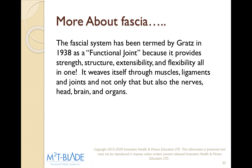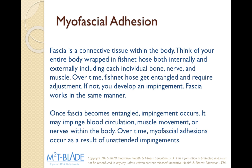A little bit about fascia and why we're interested in it. Fascia has been termed by Graetz in 1938 as a 'functional joint' because it provides strength, structure, extensibility, and flexibility all in one. It weaves itself through muscles, ligaments, joints, nerves, the brain, and organs. What we're looking for is a myofascial adhesion — where the fascia gets entangled. When it gets entangled, it causes two things: compression and stretch to the nerve, and lack of mobility, which can affect the kinetic chain and cause issues down the road.